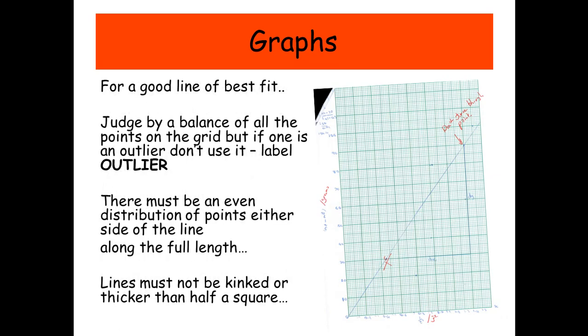Okay, let's just talk about the line of best fit. Now you don't need to force it to go through the origin. So you don't necessarily have to go through zero. You need a good balance of points around your line. So let's have a look at what it says here. So judge by a balance of all the points on the grid. But if one of them is an outlier, don't use it.